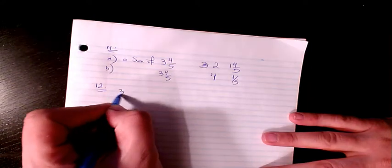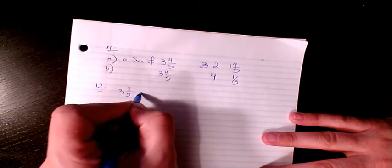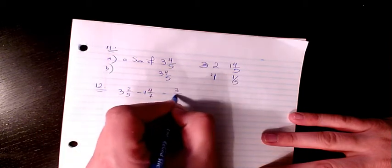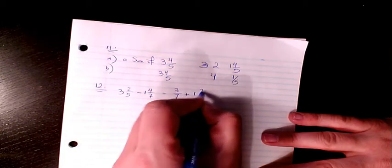Why three and two-fifths minus one and four-sevenths is the same as three-sevenths plus one and two-fifths?